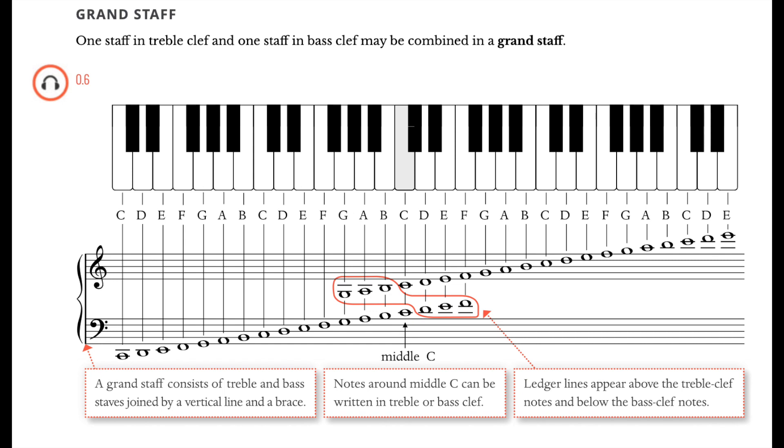So here's an image that's taken from page four of your textbook, and this shows you the grand staff, which is a pair of two staves. The top one has the treble clef, and you see the treble clef in its position with that circle around the second line from the bottom, and that defines that second line as G.